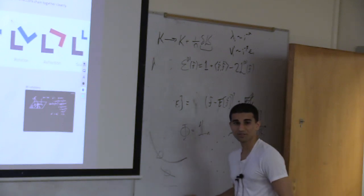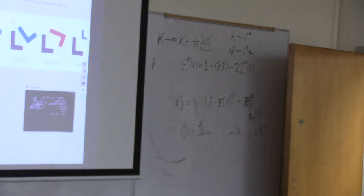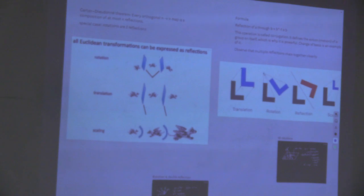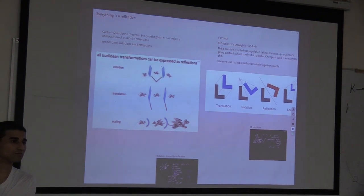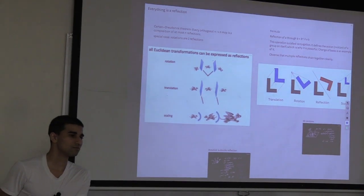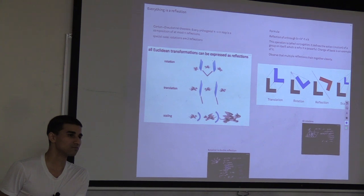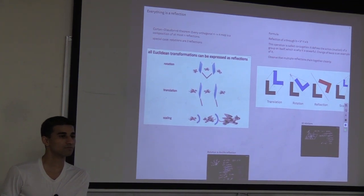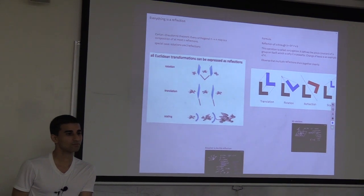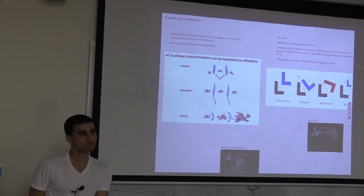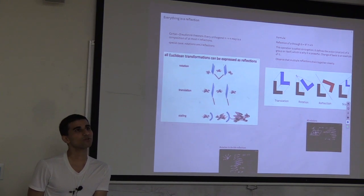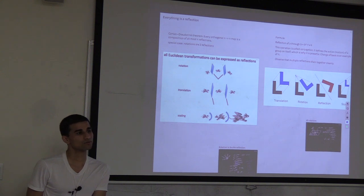Building on this: two parallel lines intersect at infinity; two non-parallel lines intersect at a finite point. But if both lines also pass through the point at infinity, don't they intersect there too? This leads to the realization that you're not adding just one point at infinity but many - different points for different directions.